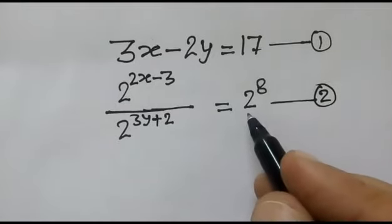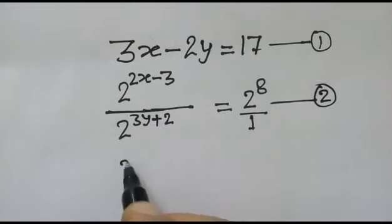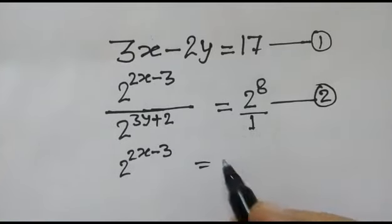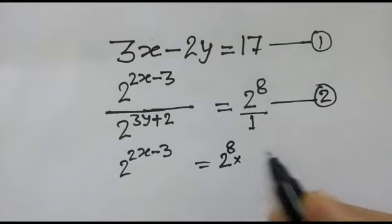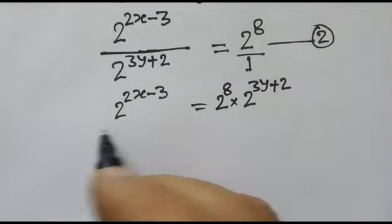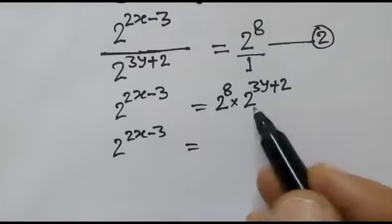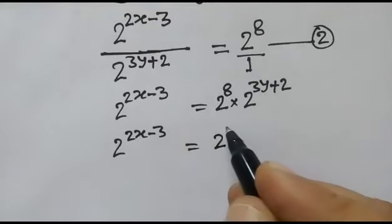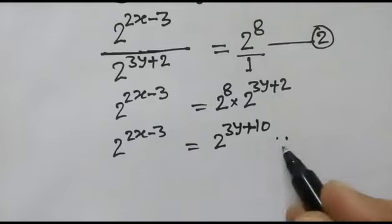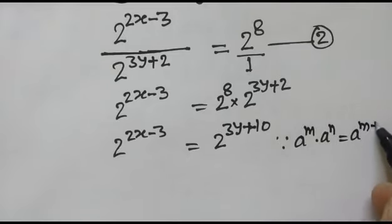First, we will take equation two and transform it. We can write the denominator over 1, so by cross multiplication: 2 to the power (2x minus 3) is equal to 2 to the power 8 multiplied by 2 to the power (3y plus 2). Using the rule a^m times a^n equals a^(m plus n), this becomes 2 to the power (3y plus 10).